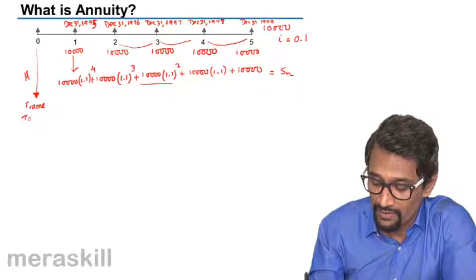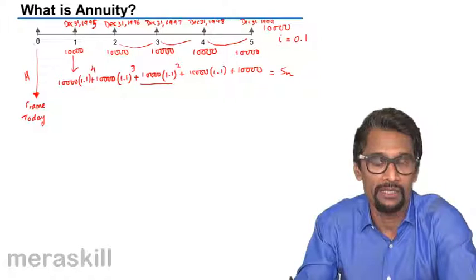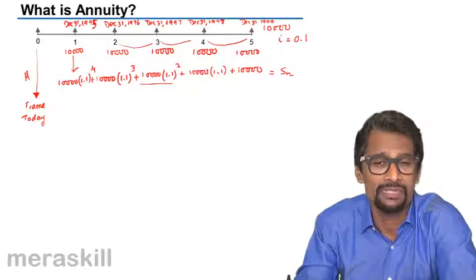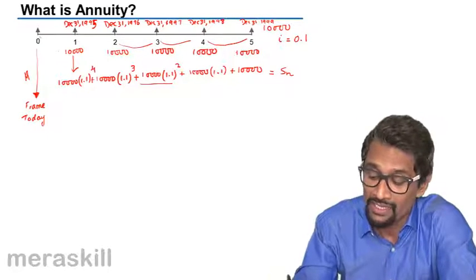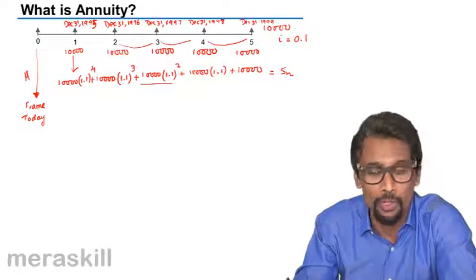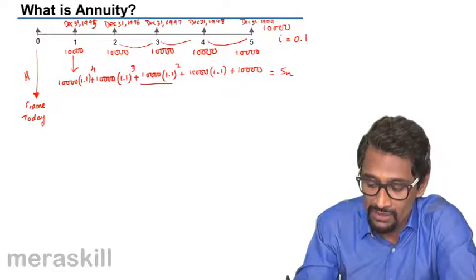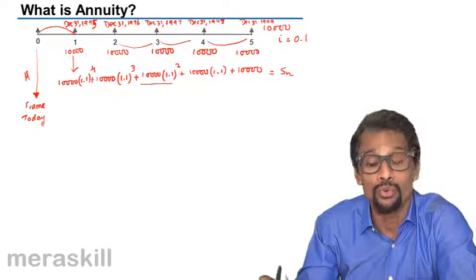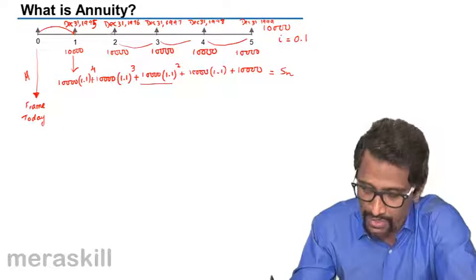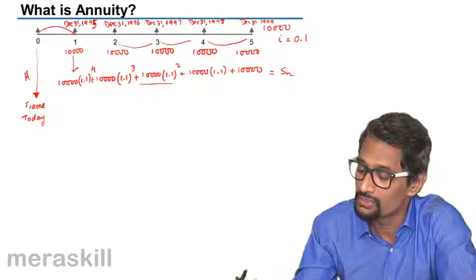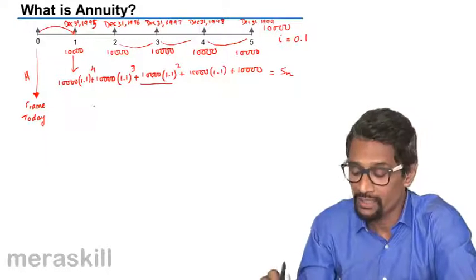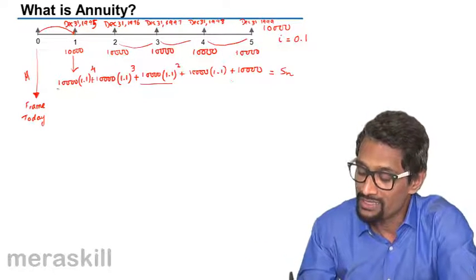Today is our zero period — our reference frame. Suppose a loan is sanctioned; after one period, which could be one year or one month, since your loan was sanctioned or since you deposited, the amount starts earning interest. The first installment accrues interest for four years — one year, two years, three years, four years — and accordingly you get the accumulated amount.